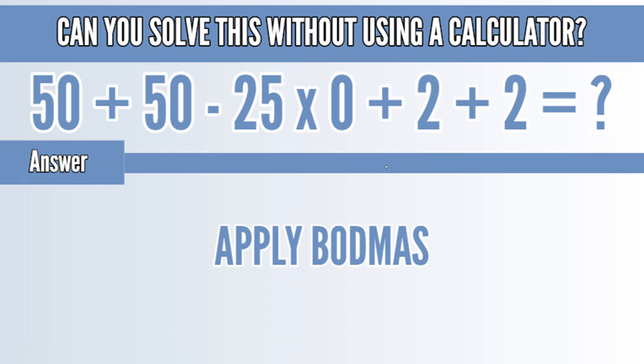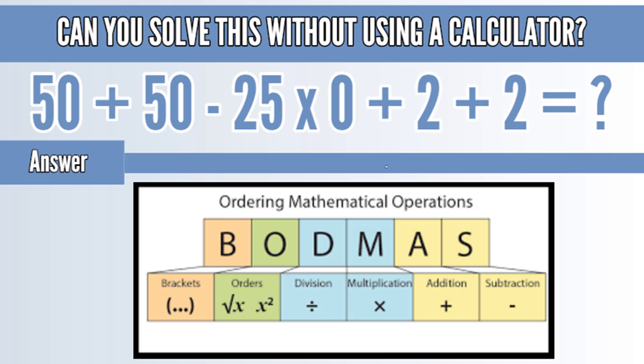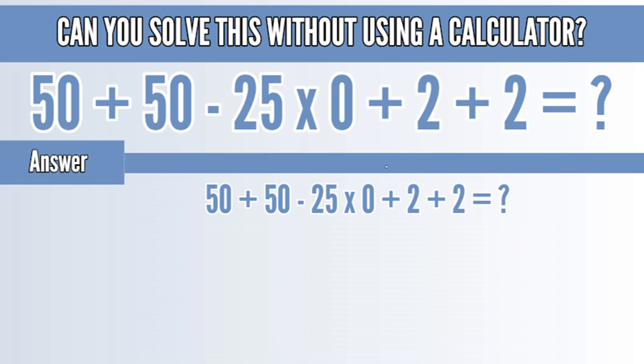Now let's solve this equation. Let's first apply the BODMAS which says first we will do the brackets, then orders, then division, multiplication, and followed by addition and subtraction. If you solve this equation which is 50 plus 50 minus 25 into 0 plus 2 plus 2 is equal to question mark.